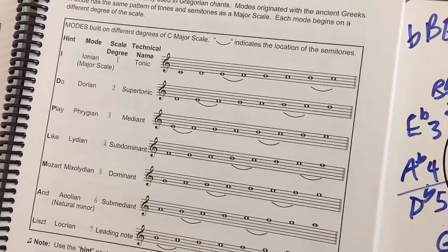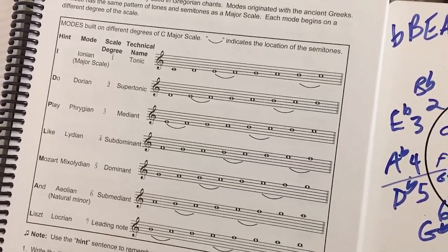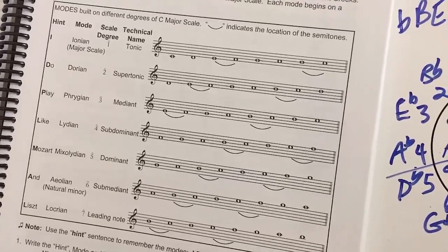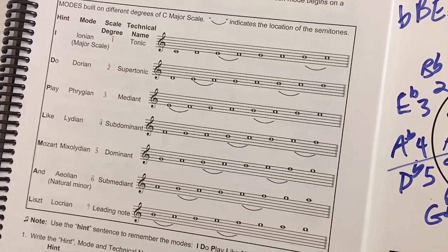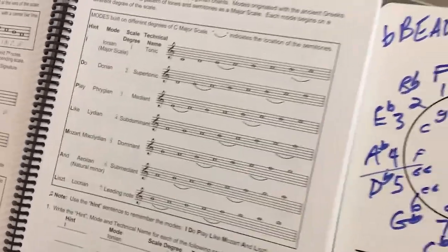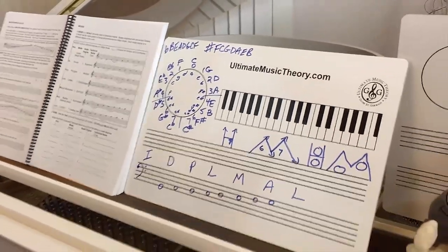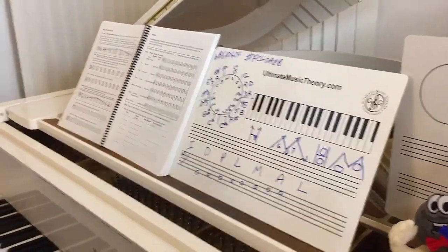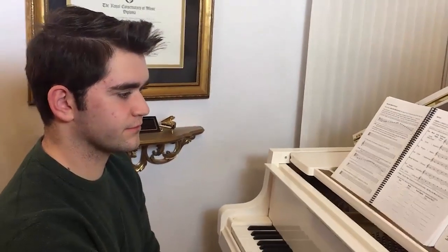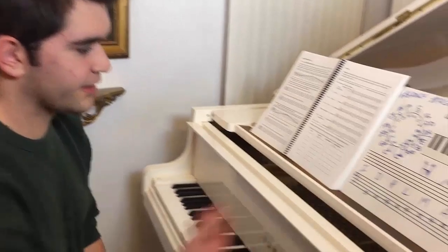An easy way to remember is we actually have a little hint sentence: 'I do play like Mozart and Liszt' — Ionian, Dorian, Phrygian, Lydian, Mixolydian, Aeolian, and Locrian. That's a big thing. So walk me through how you're going to determine what is the mode, Carter, of the scale that we see at the bottom of the page.